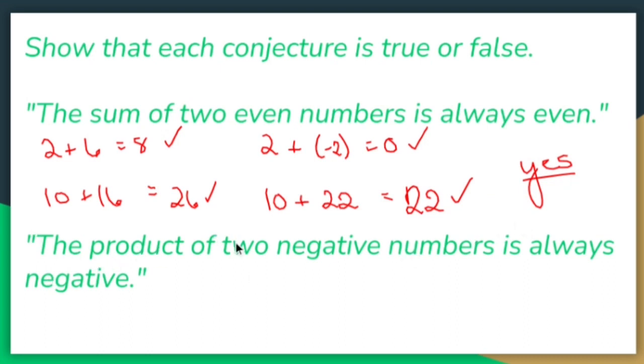Now, the product of two negative numbers is always negative. Is that true or false? Well, let's multiply two negative numbers together.